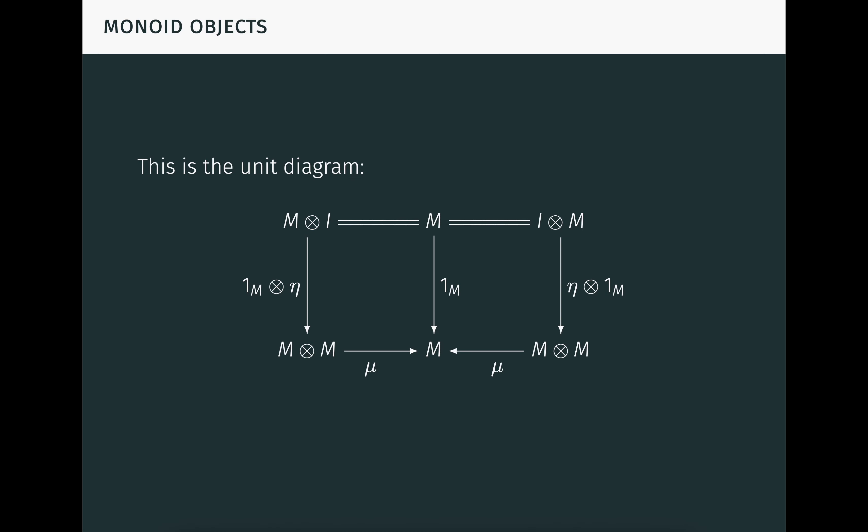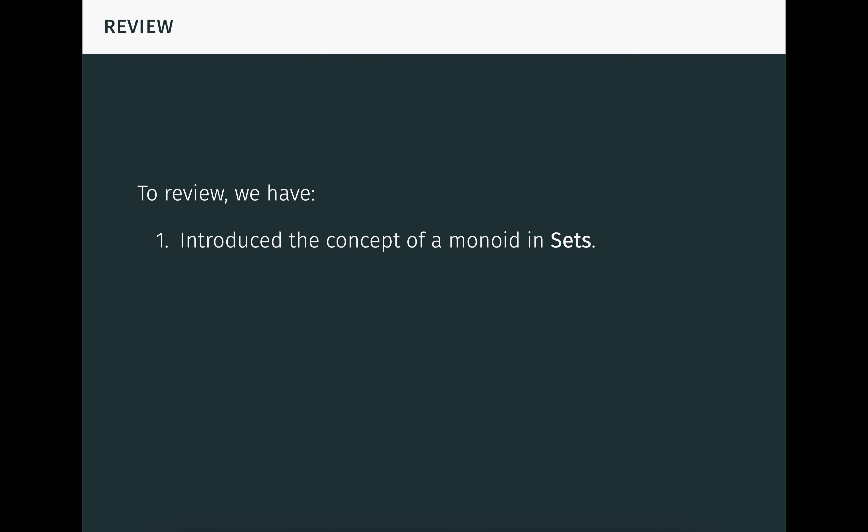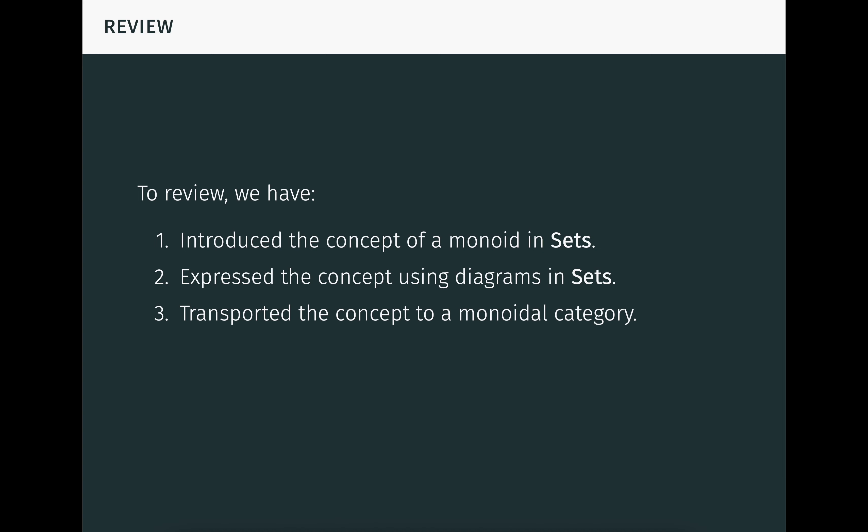At this point, it's worth taking a step back to reflect on what we've done here. To review, so far we have introduced the concept of a monoid in the category of sets, expressed that concept using diagrams in sets, and using those diagrams, we've transported the concept to an arbitrary strict monoidal category with monoidal product and unit. You might wonder, why on earth are we doing all this? Another reason is that we can now specialize the concept to a familiar monoidal category and derive great profit from this.